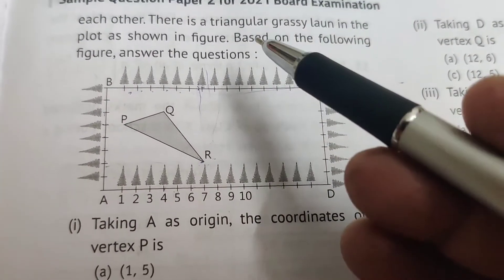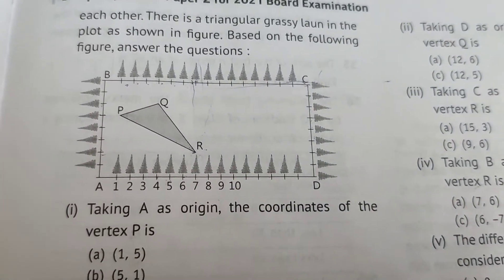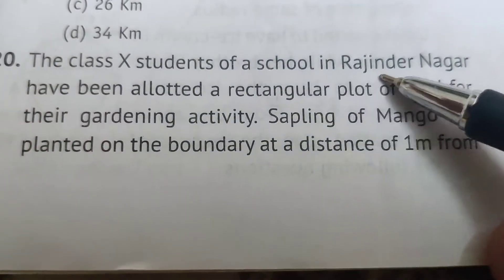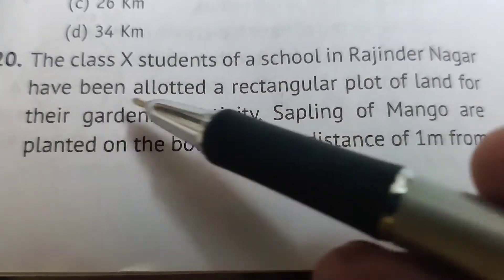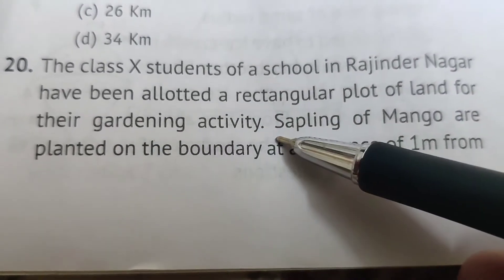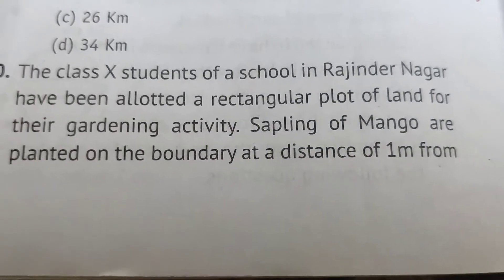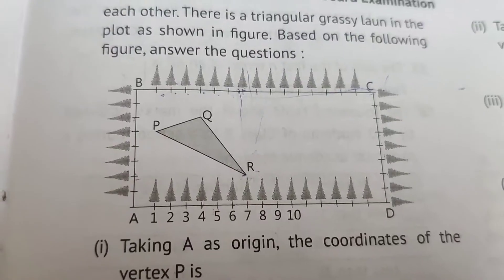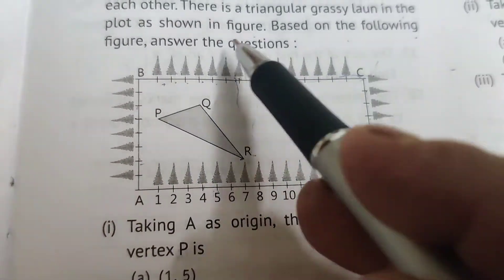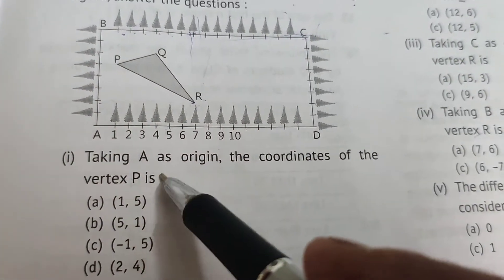This is another case study of the chapter on coordinate geometry. The class 10 students of a school in Rajinder Nagar have been allotted a rectangular plot of land for their gardening activity. Saplings of mango are planted on the boundary at a distance of one meter from each other. There is a triangular grass lawn in the plot as shown in the figure. Based on the following figure, answer the questions.